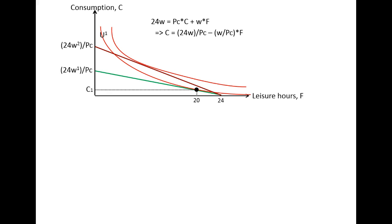Let's see what happens. We will find a new utility function, which gives us a situation where I'm going to receive a consumption of C2, and I'm going to have 9 hours of leisure hours. That indicates that 24 minus 9, that's 15 hours of work.